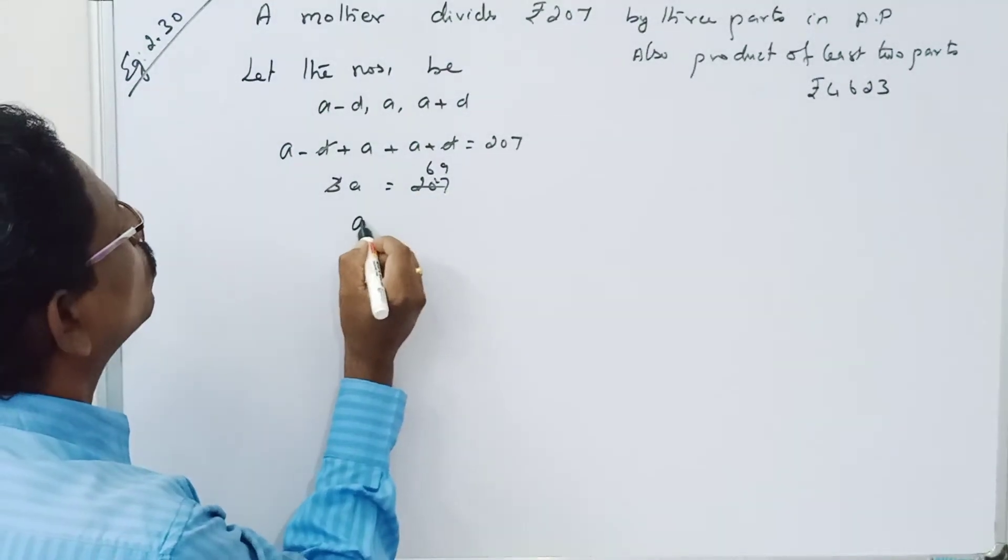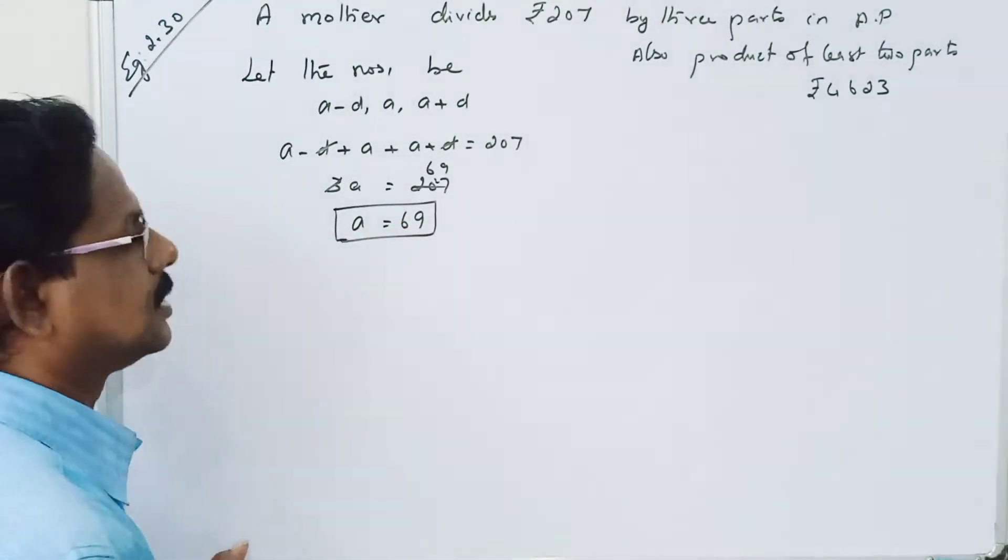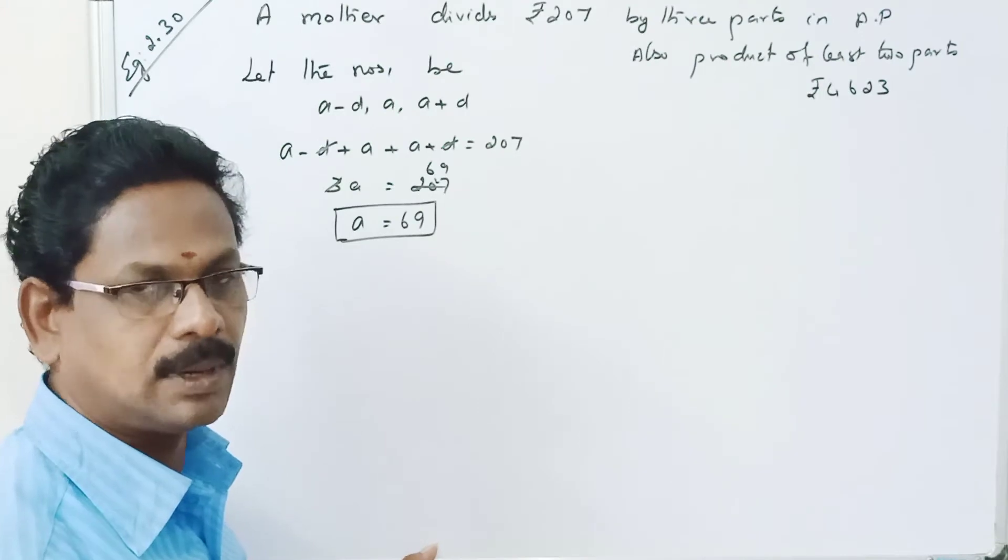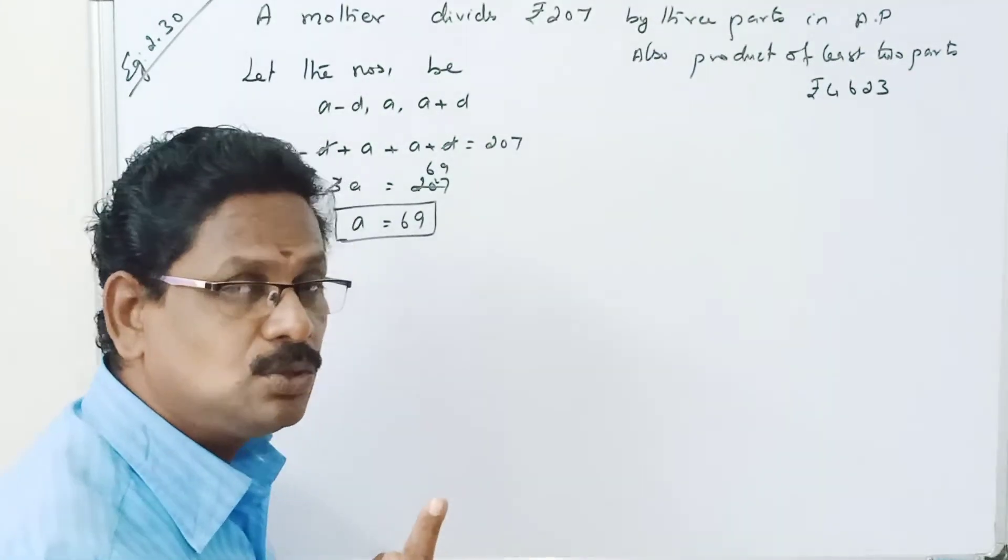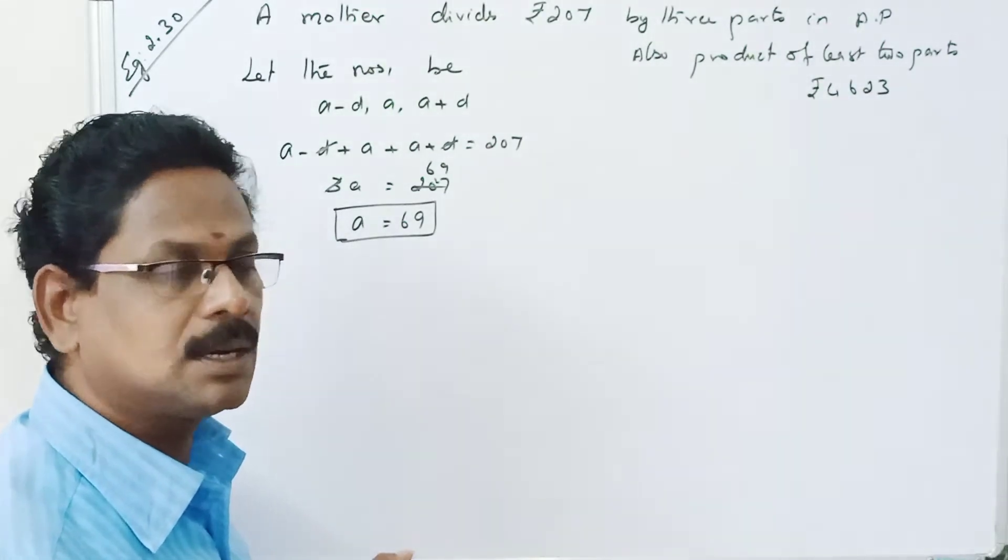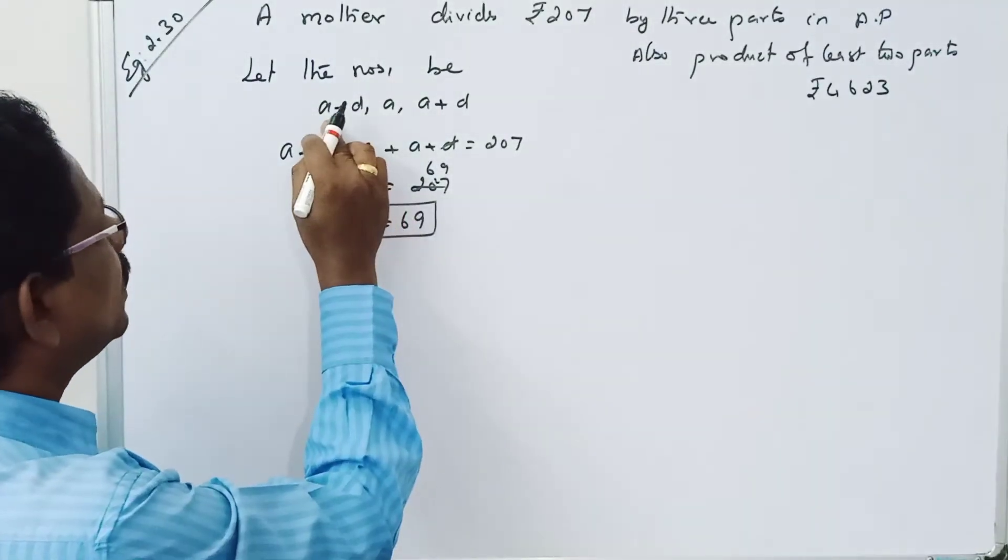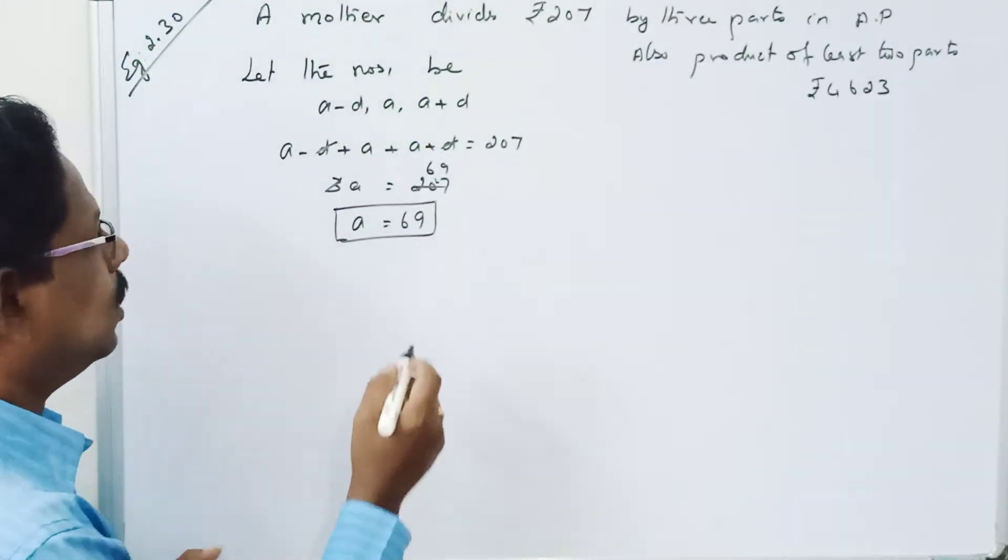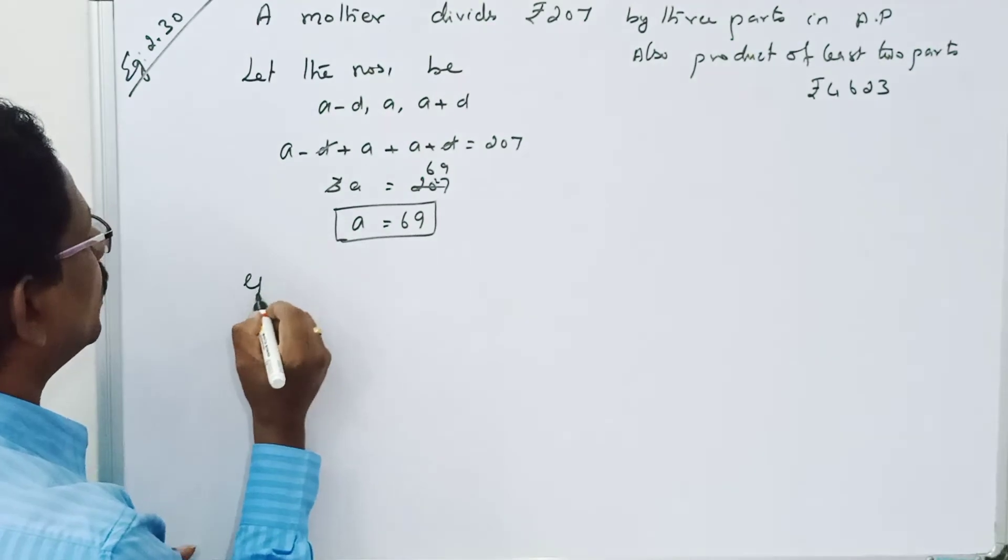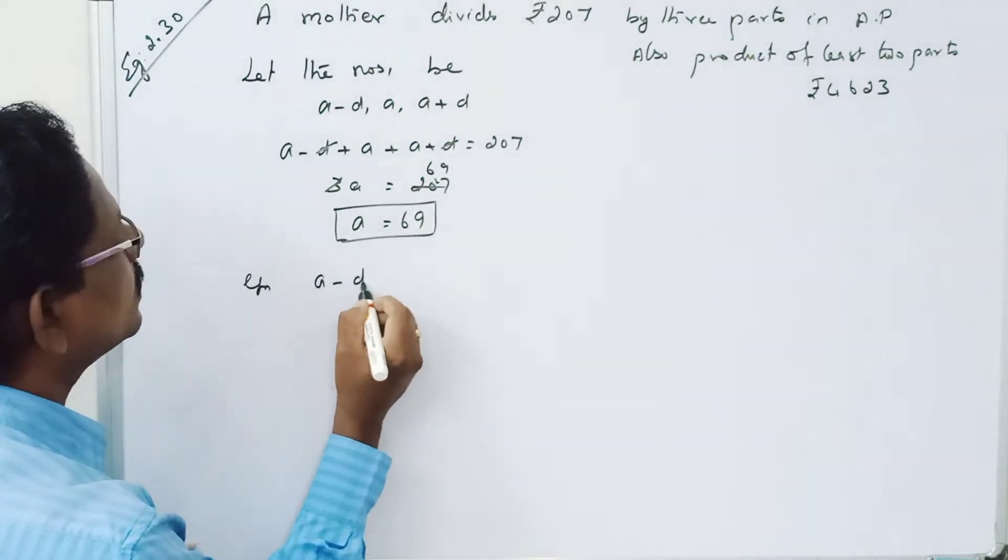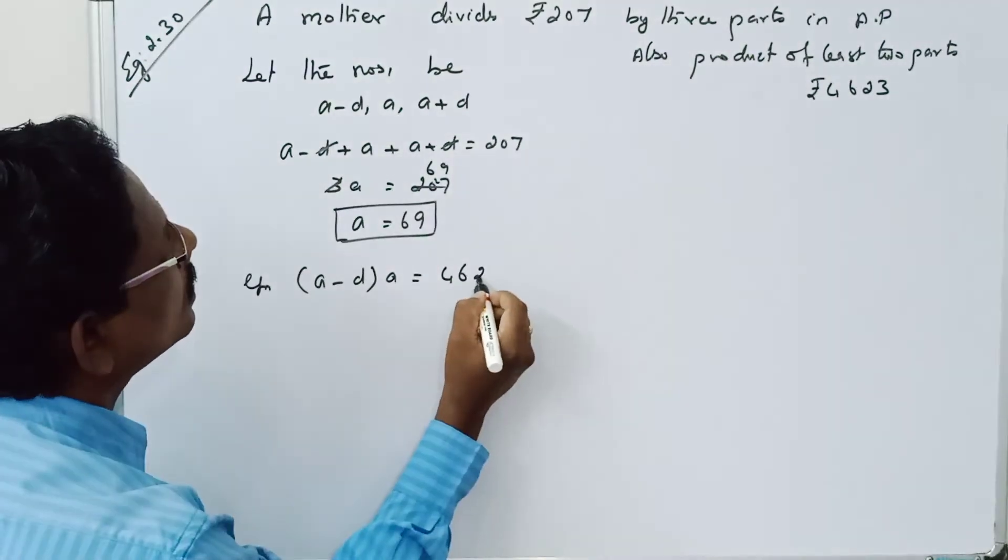So a equals 69. The product of the least two parts is given: a minus d times a equals 4623.